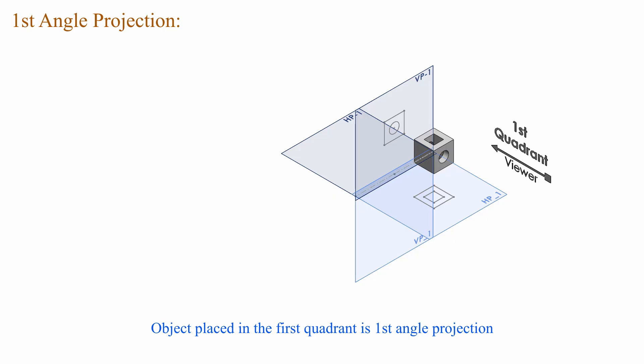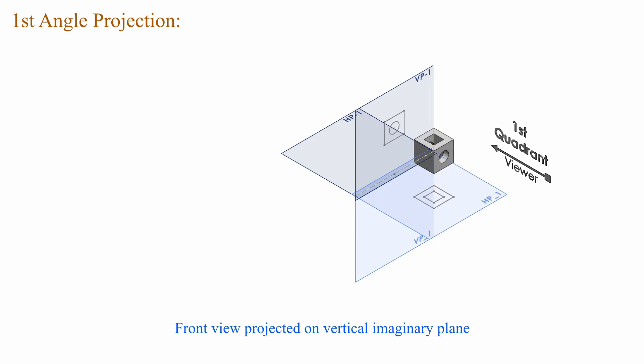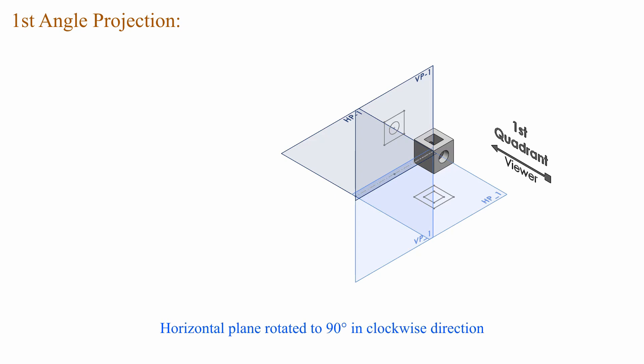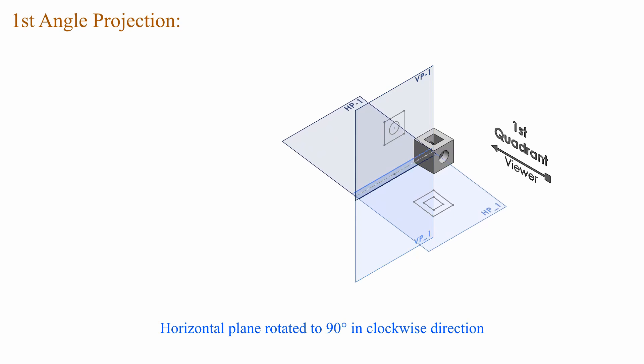Next we are going to see first angle projection. An object placed in the first quadrant is first angle projection. The sequence is: viewer, object, imaginary plane. The front view is projected on the vertical imaginary plane, the top view is projected on the horizontal imaginary plane, and the horizontal plane is rotated 90 degrees in the clockwise direction.